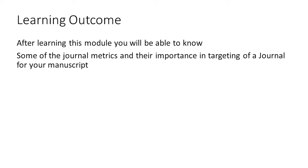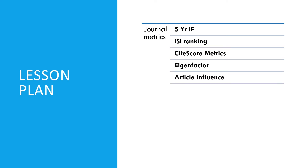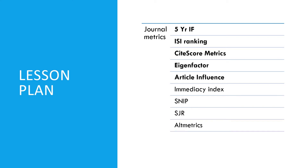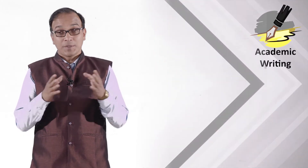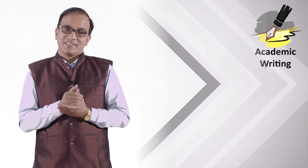After completing this module you will be able to learn about various journal metrics and their importance in targeting journals for publication. As far as the lesson plan is concerned, we will be covering: five-year impact factor, ISI ranking, CiteScore metrics, Eigenfactor, article influence, immediacy index, SNIP, SJR, h-matrix, and h5. We also recap how the three key factors — impact, speed, and reach — form the basis of these metrics.